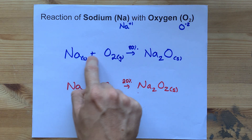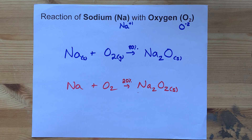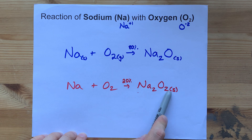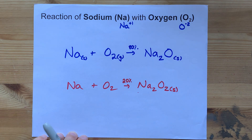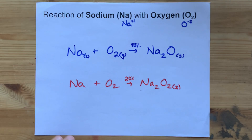So, sodium plus oxygen makes sodium oxide — a typical synthesis reaction that makes an ionic compound. Sodium peroxide is also made. That's the way it goes.